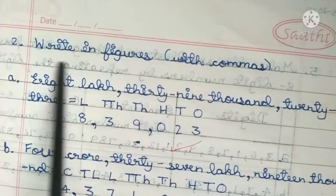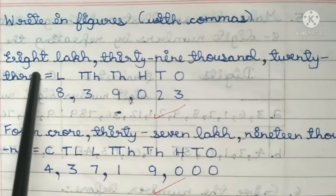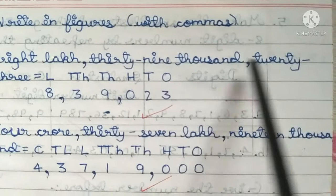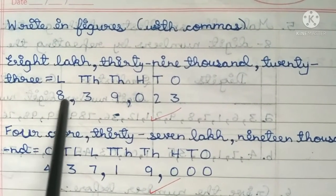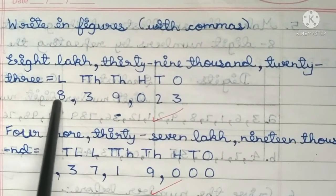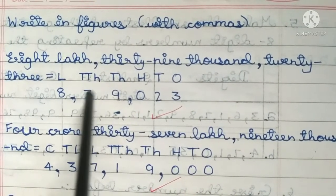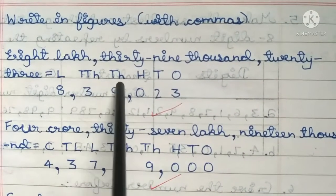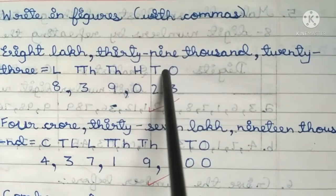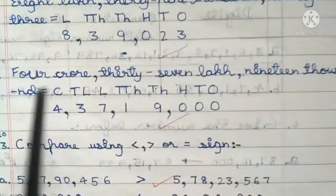Write in figures with commas: 8 lakh 39,023. That is equal to: L is 8, ten-thousands is 3, thousands is 9, hundreds is 0, tens is 2, ones is 3. So, 8,39,023.